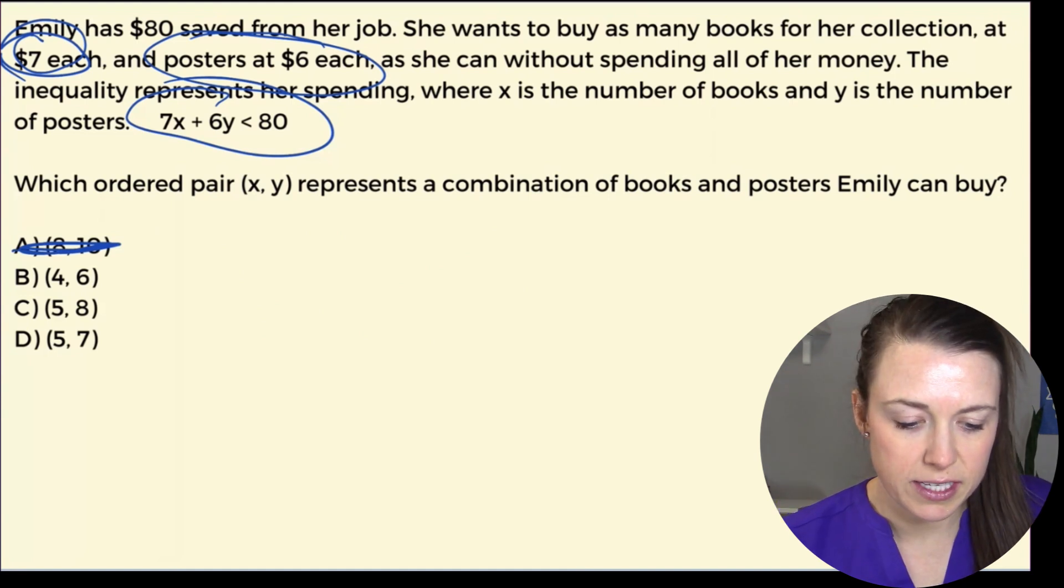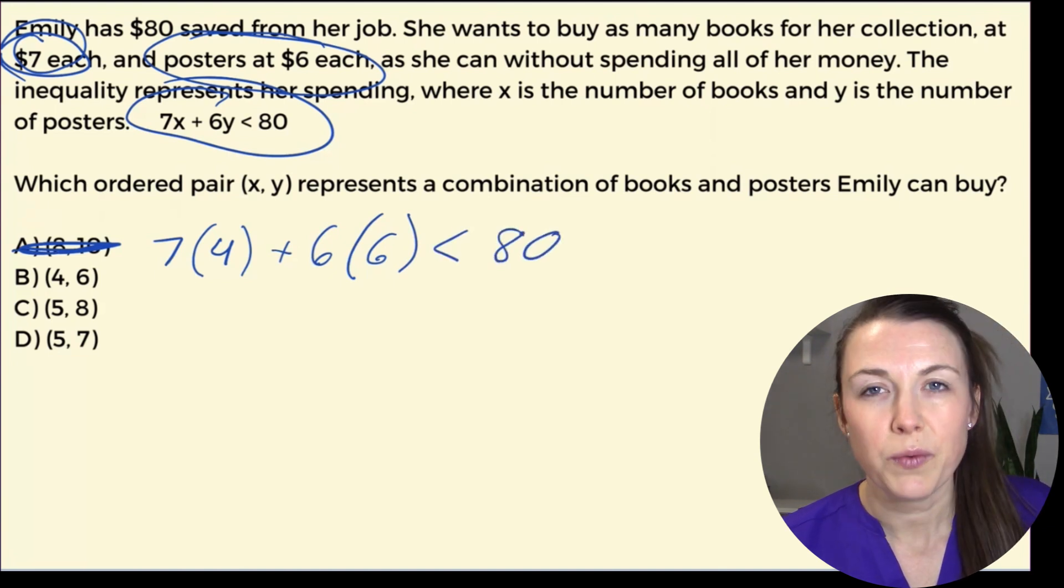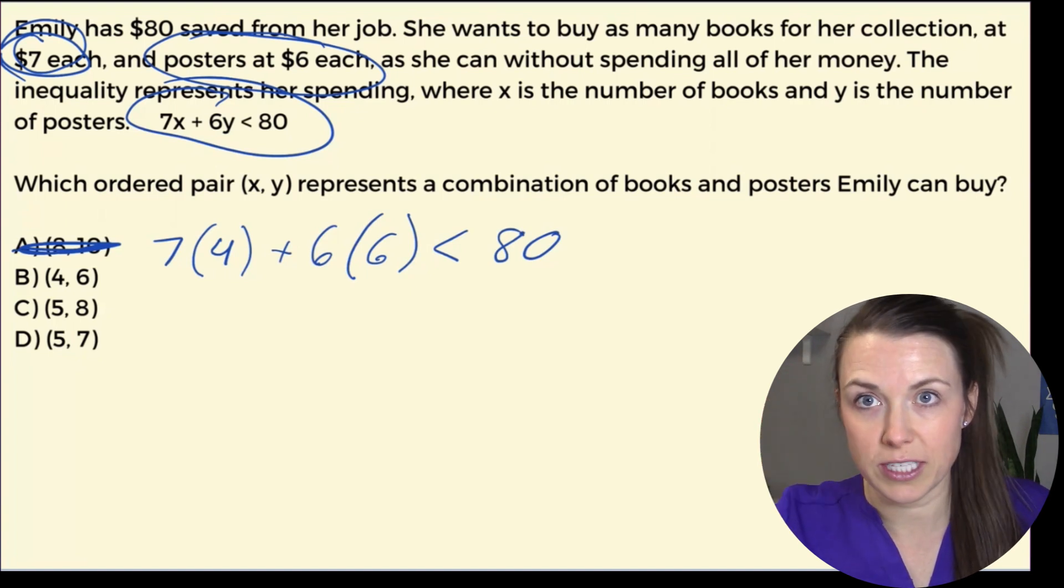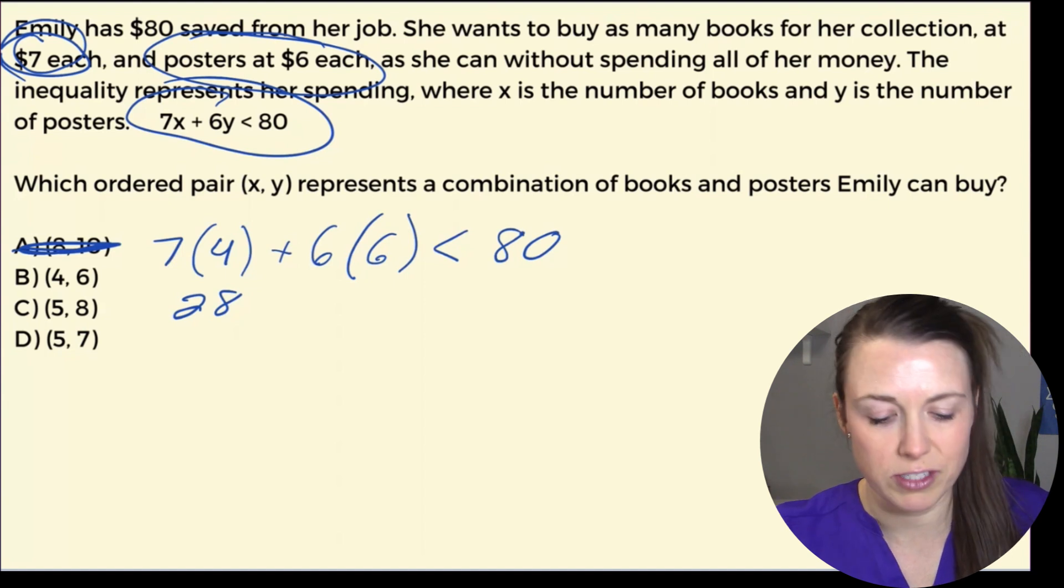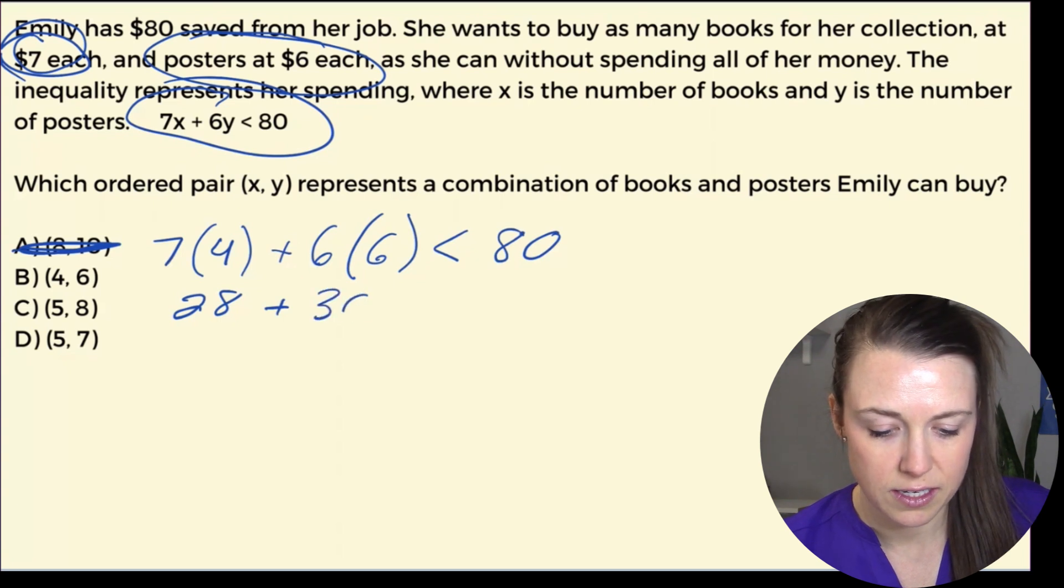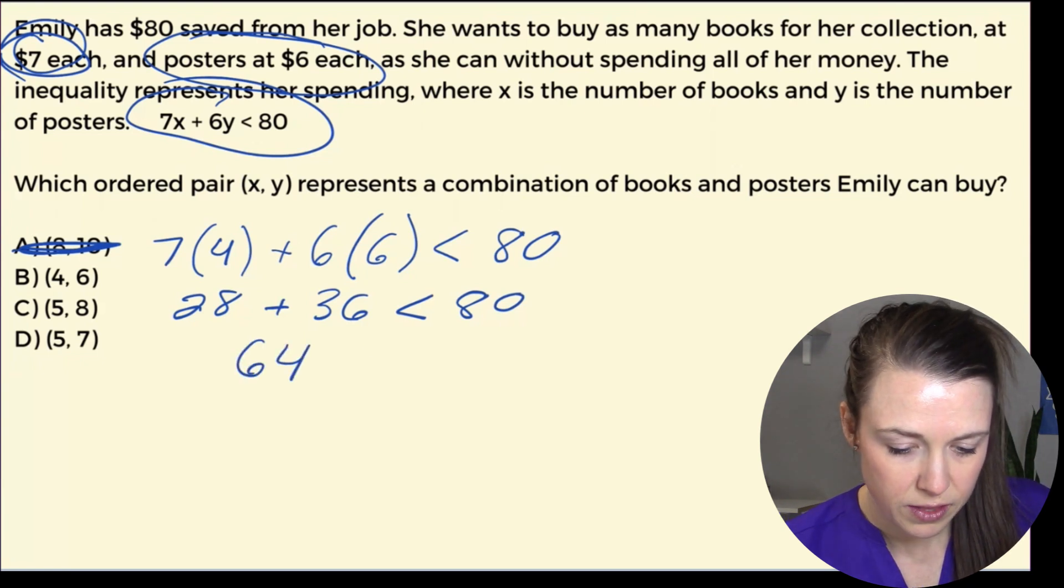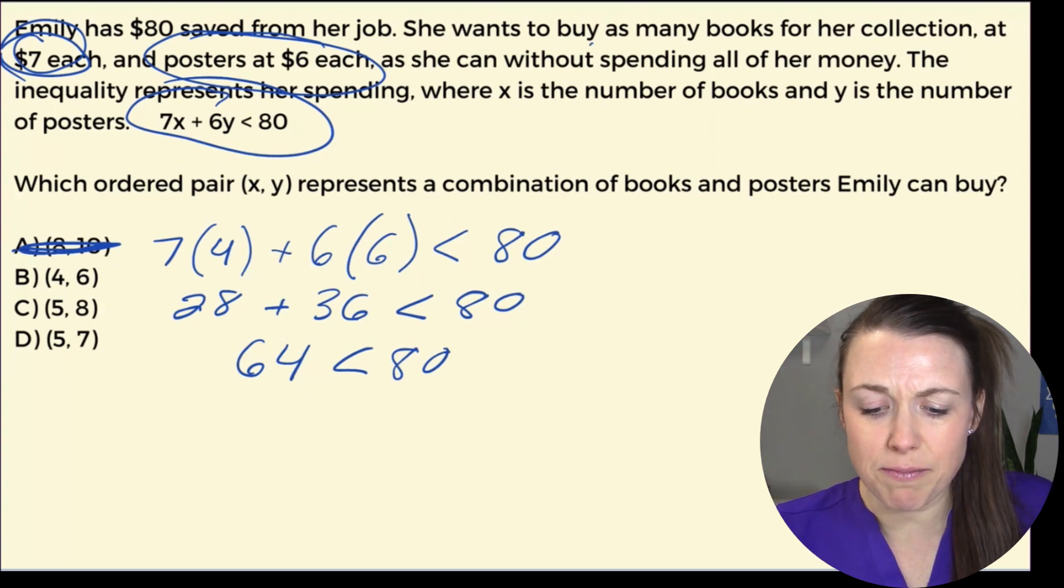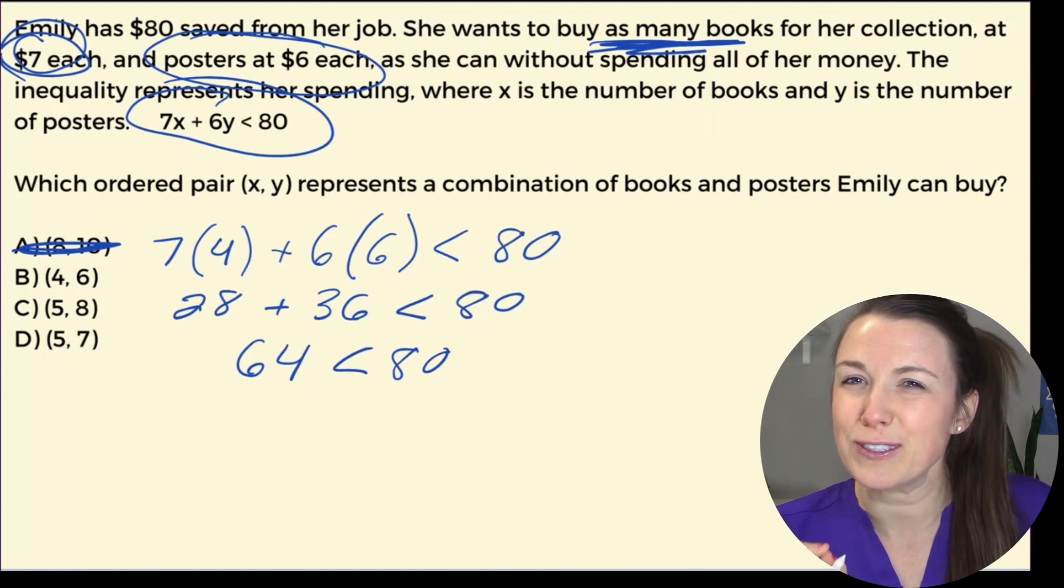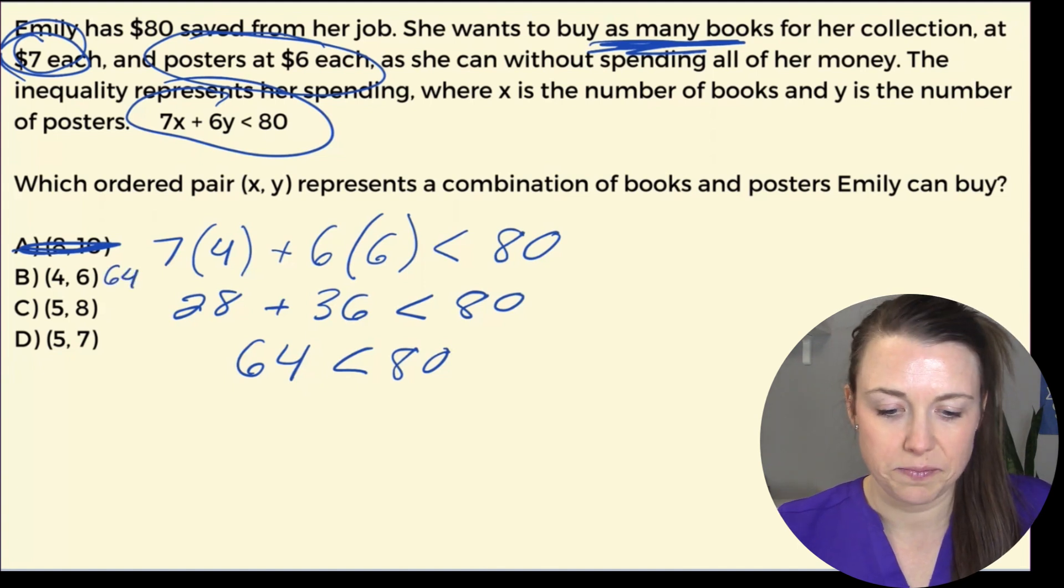Now let's try B. We'll take the same equation. I have 7 times 4 plus 6 times 6 is less than 80. 7 times 4, what I like to think about is I know that 7 times 2 is 14, and then I just double that and that gets me 28. So 28 plus 6 times 6 is 36 is less than 80. I add those together and I get 64 is less than 80. Is that true? It is true, but it says here that she wants to buy as many as she can, so maybe the other ones are just a little bit closer. I'm going to put here a 64 right next to my B.